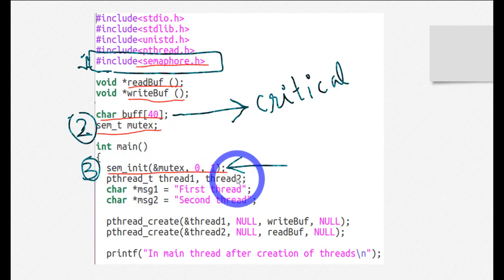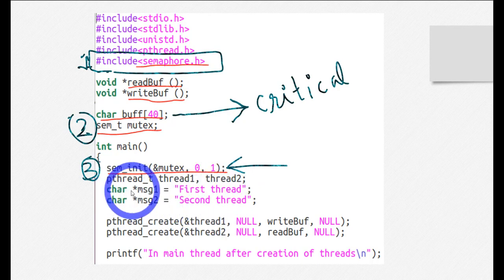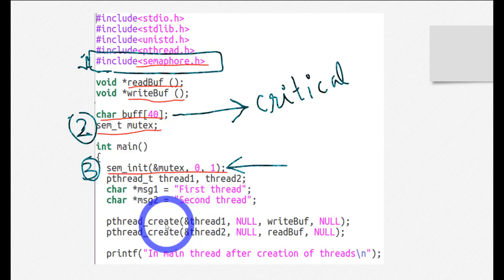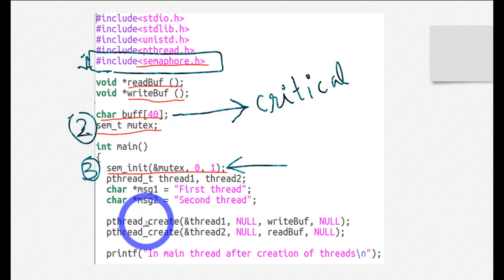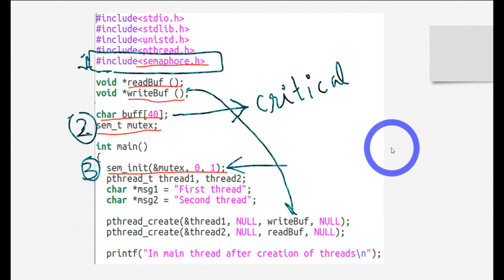Here I have created two threads — we covered this last time so I won't go into too much detail. These are the two messages of the threads: first thread and second thread. I have made a character pointer to save these strings. I created two threads using pthread_create, passing the function write_buff to thread one and read_buff to thread two.